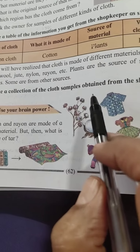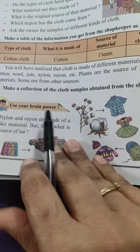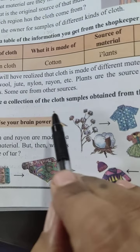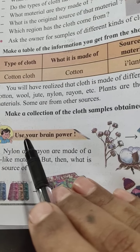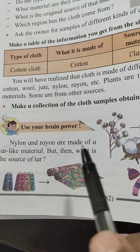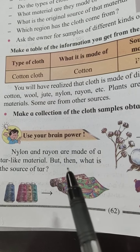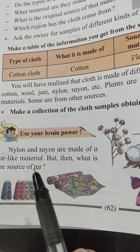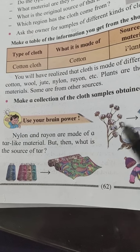Make a collection of cloth samples obtained from the shopkeeper. Use your brain: nylon and rayon are made of a tar-like material. But then, what is the source of tar?